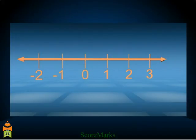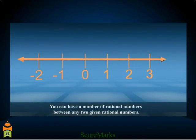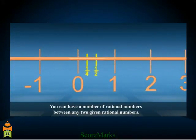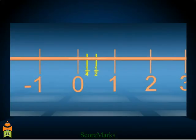Or between 1 and 2. But in case of rational numbers, you can have a number of rational numbers between any two given rational numbers, as shown. Let's see how we can find out such rational numbers.